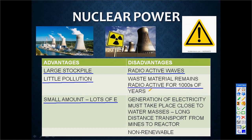Another disadvantage is that electricity generation must take place near water. This is a disadvantage because if the uranium mine is in Johannesburg, the nuclear fuel needs to be transported to Cape Town, where the power station is located close to water. Nuclear fuel is also a non-renewable form of energy.